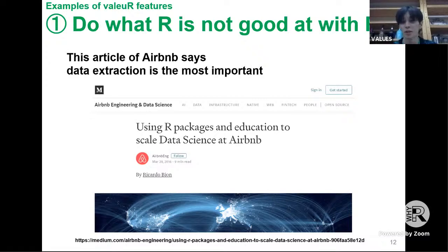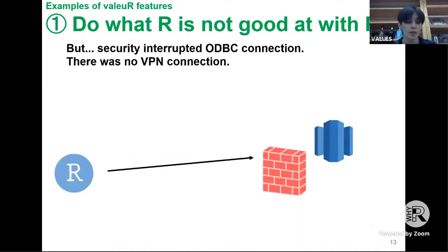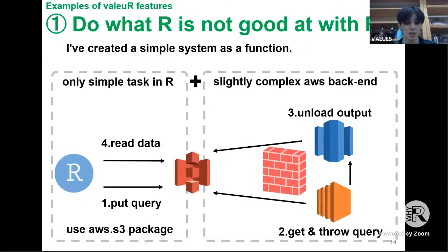First, we made it easy to extract data. An Airbnb article states simplifying data extraction should be the first step in team package development. In our case, individuals couldn't directly access the database for security reasons. We addressed this by creating a function that works with AWS services — a simple R script that puts a query in S3, monitors the S3 bucket, and reads the returned results — realizing the same UI as an ODBC connection.